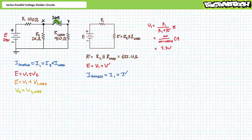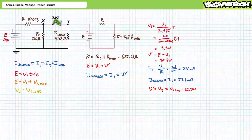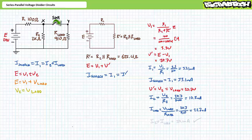The voltage divider rule demonstrates V1 is 3.3 volts. V prime is the remaining 20.7 volts. Ohm's law demonstrates I1 is 33.1 milliamps, and source current also equals 33.1 milliamps. Given R prime is the parallel combination of R2 and R load, V prime equals V2 equals V load equals 20.7 volts. Ohm's law demonstrates I2 is 10.3 milliamps, and current through the load resistor is 22.7 milliamps. As a check, I2 plus I load equals 33.1 milliamps.